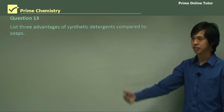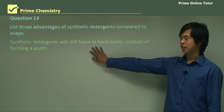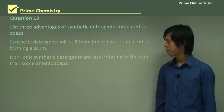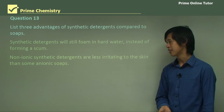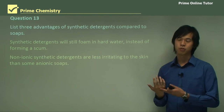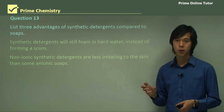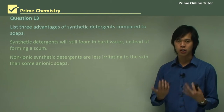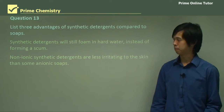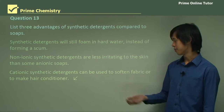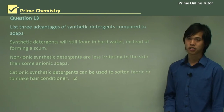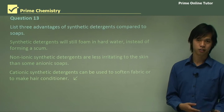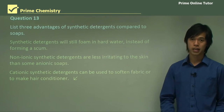There are three advantages of synthetic detergents compared to soaps. The main one is that synthetic detergents will still foam in hard water instead of forming a scum. Non-ionic synthetic detergents are less irritating to the skin than some anionic soaps, because they don't draw out as much water — which is why many people don't use soap anymore as it's quite harsh on the skin. Cationic synthetic detergents can be used to soften fabrics or to make hair conditioner.